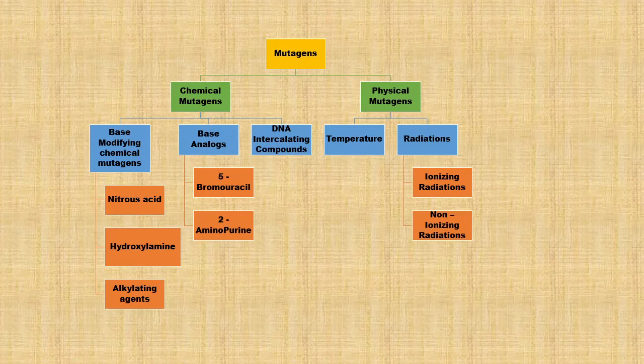Hello everyone, welcome back to my channel. In this video, we will continue with the remaining third parameter under the chemical mutagens — that was DNA intercalating compounds. For base-modifying chemical mutagens and base analogs, you can visit my channel and watch my previous videos.